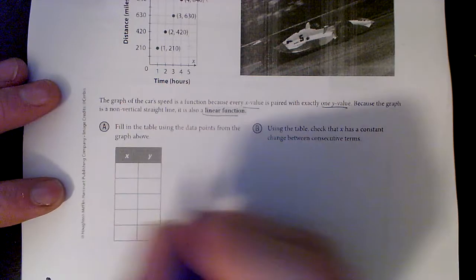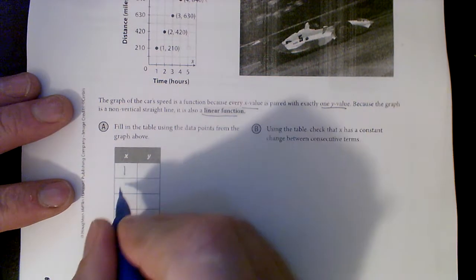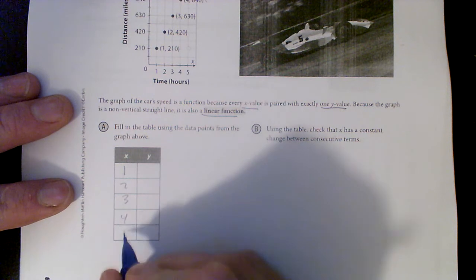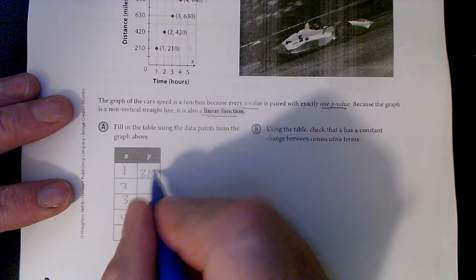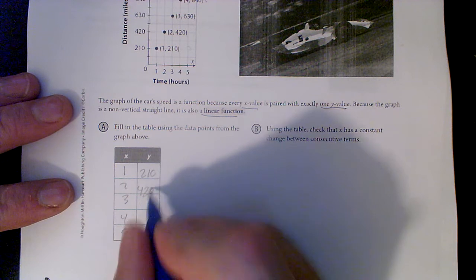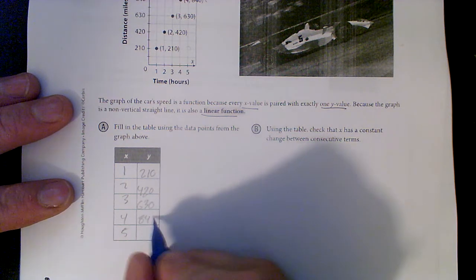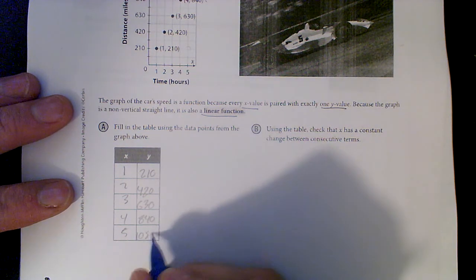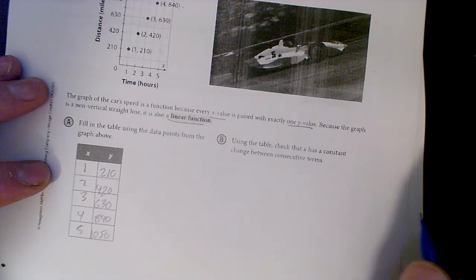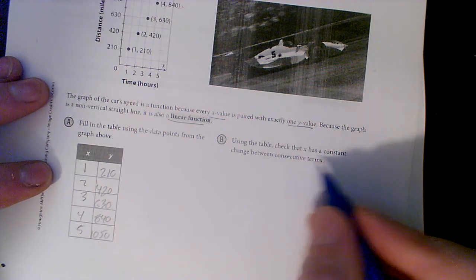So here we go. We're gonna list it, right? We've got 1, 2, 3, 4, 5, and X. Now we've got multiples of 210, right? 210, 420, 630, 840, and 1050 right there. Use the table and check that X has a constant change between consecutive turns - that was our difference last chapter.